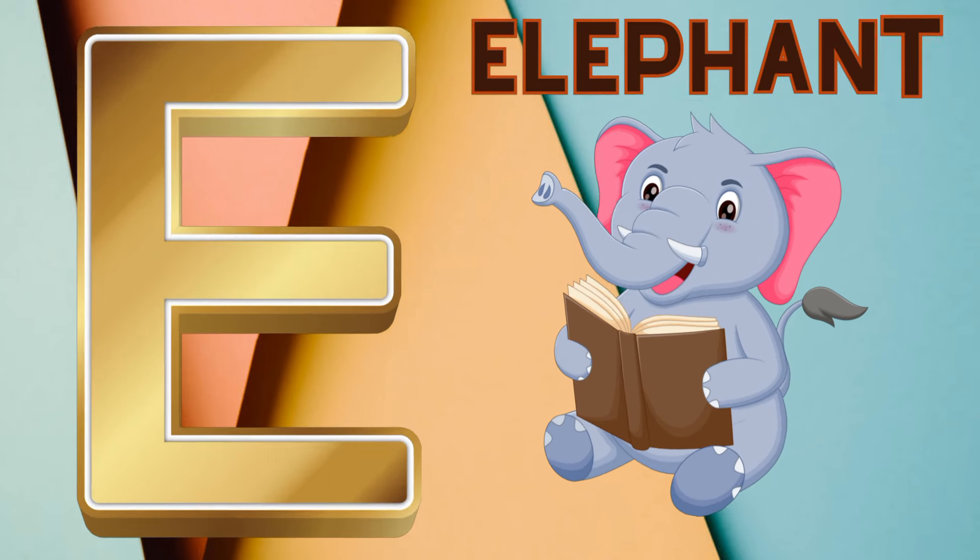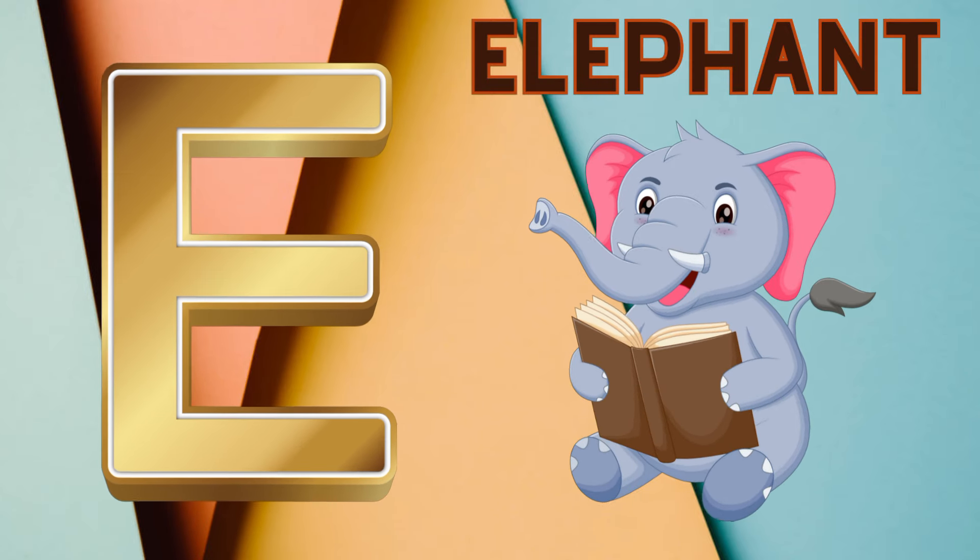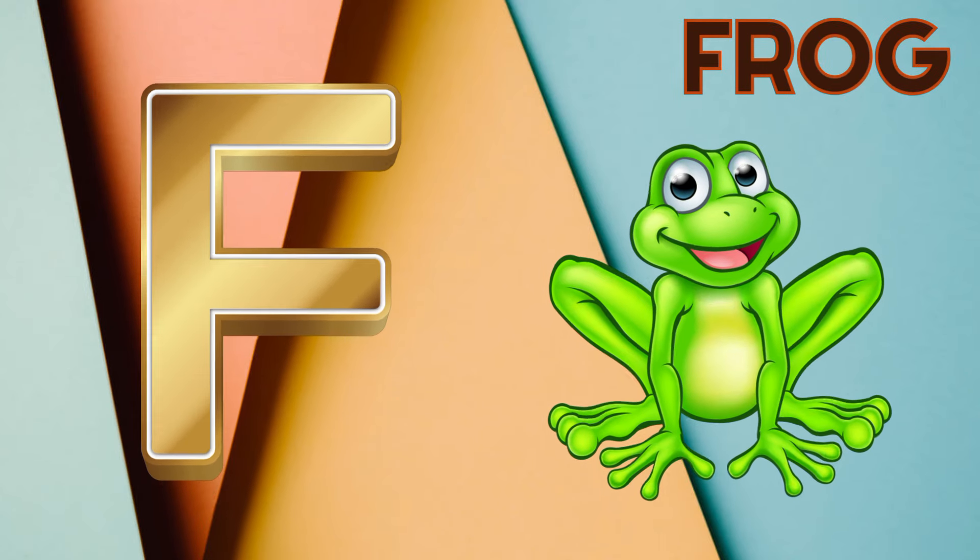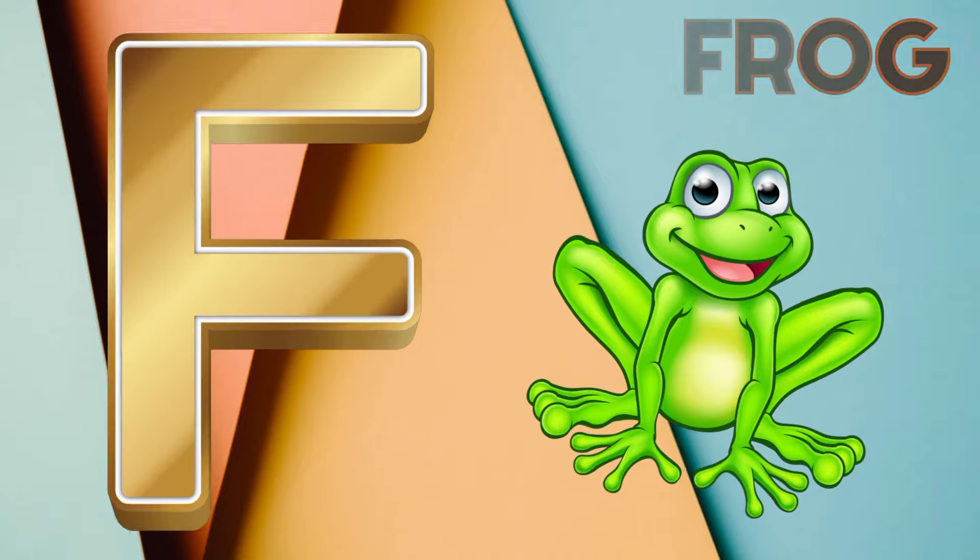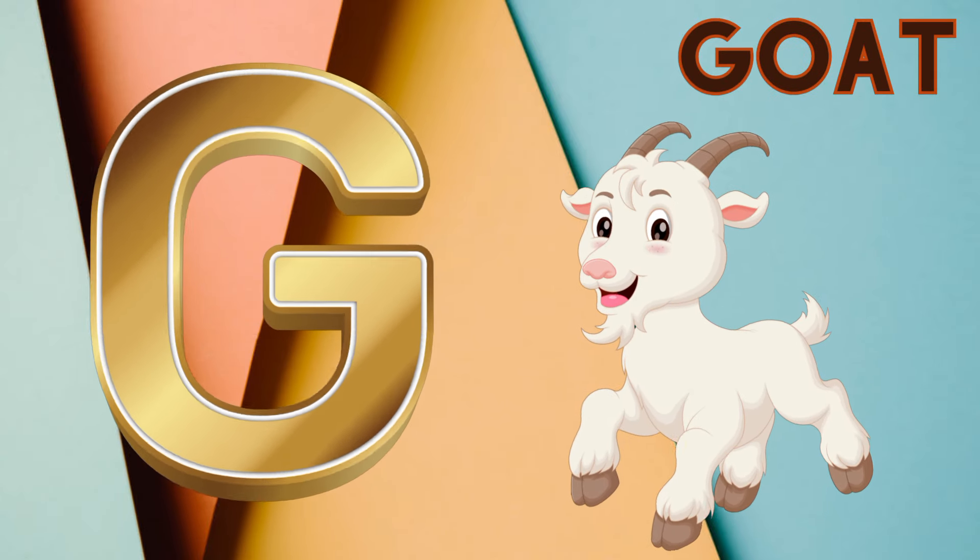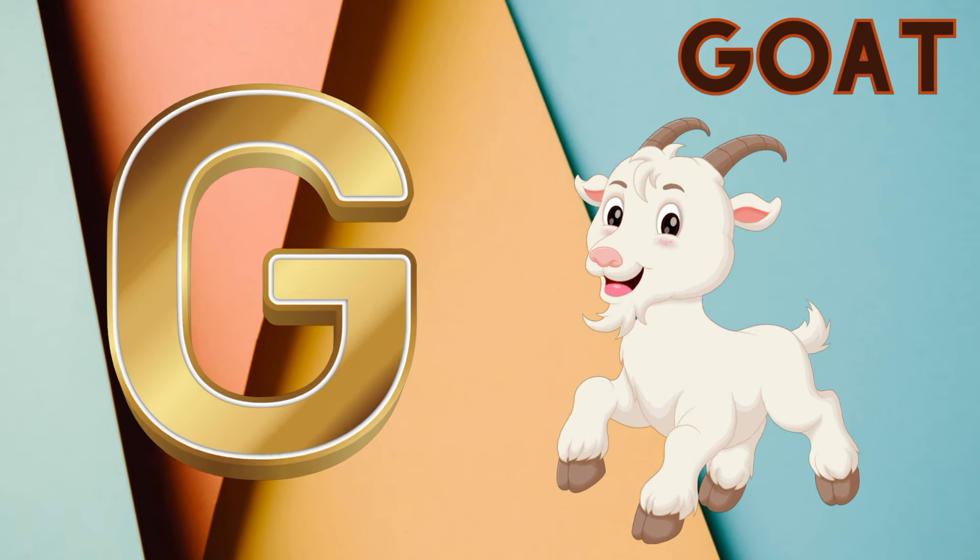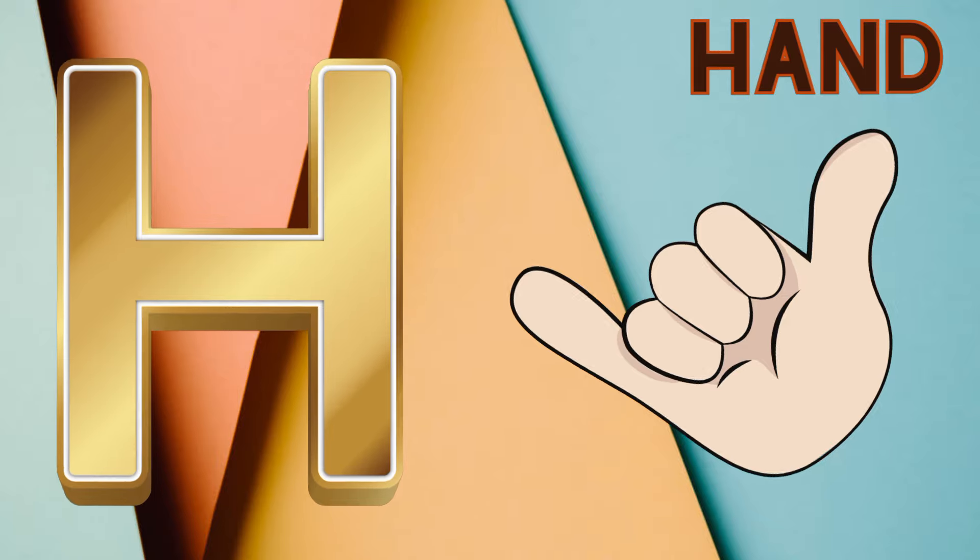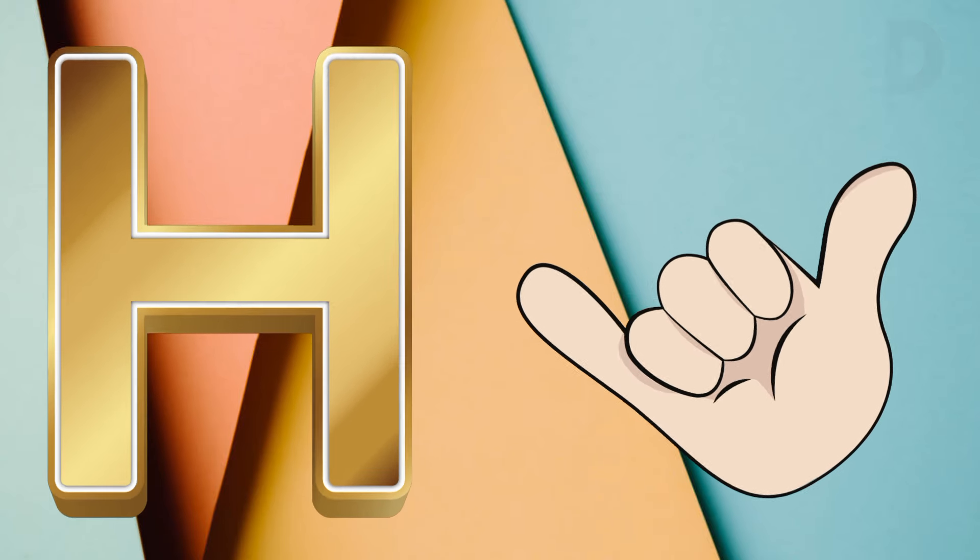E is for elephant, e-e-elephant. F is for frog, f-f-frog. G is for goat, g-g-goat. H is for hand, a-a-hand.